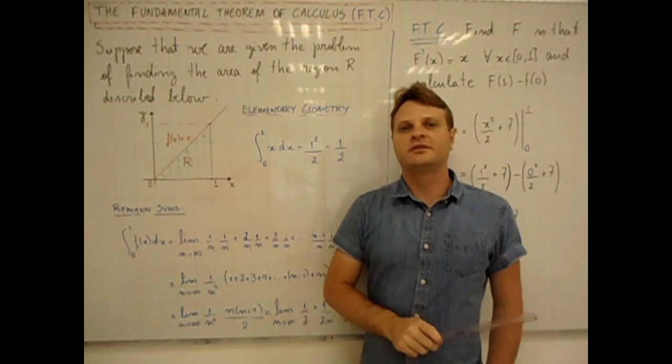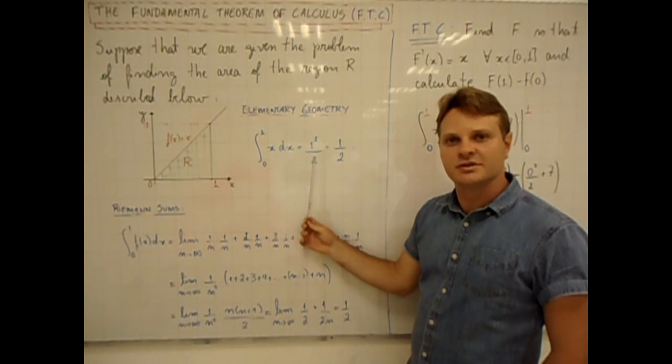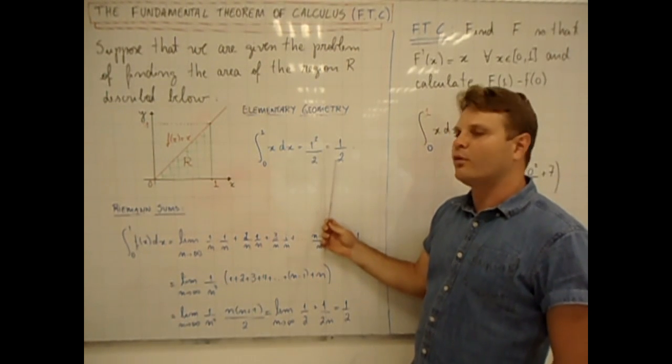From elementary geometry, we know that the area of capital R is nothing but 1 squared divided by 2, which gives us the value of 1 half.